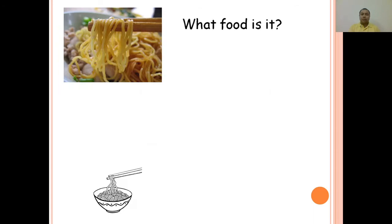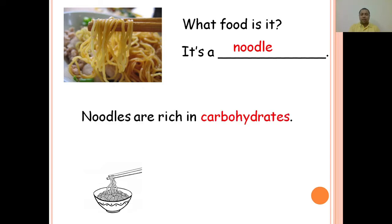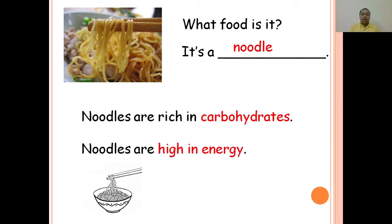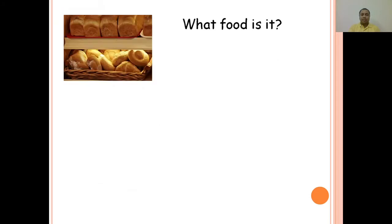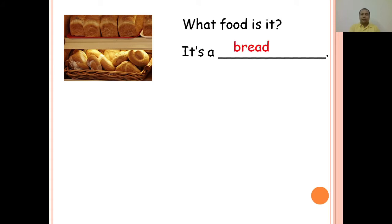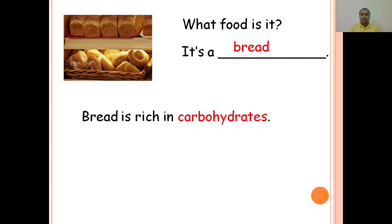What food is it? It's a noodle. Noodles are rich in carbohydrates. Noodles are high in energy. What food is it? It's bread. Bread is rich in carbohydrates. Bread is high in energy.